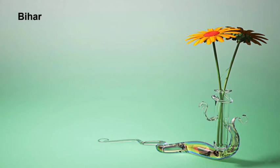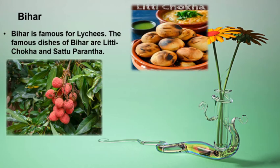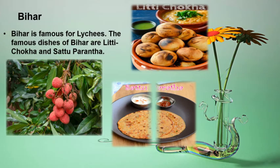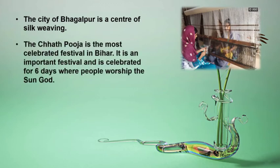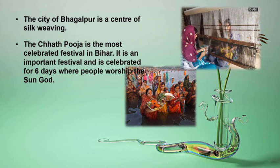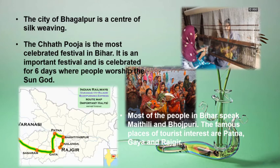Bihar is famous for litchis. The famous dishes of Bihar are Litti Chokha and Sattu Paratha. The city of Bhagalpur is a centre of silk weaving. The Chhath Puja is the most celebrated festival in Bihar — an important festival celebrated for six days where people worship the sun god. Most people in Bihar speak Maithili and Bhojpuri. Famous tourist places include Patna, Gaya and Rajgir.